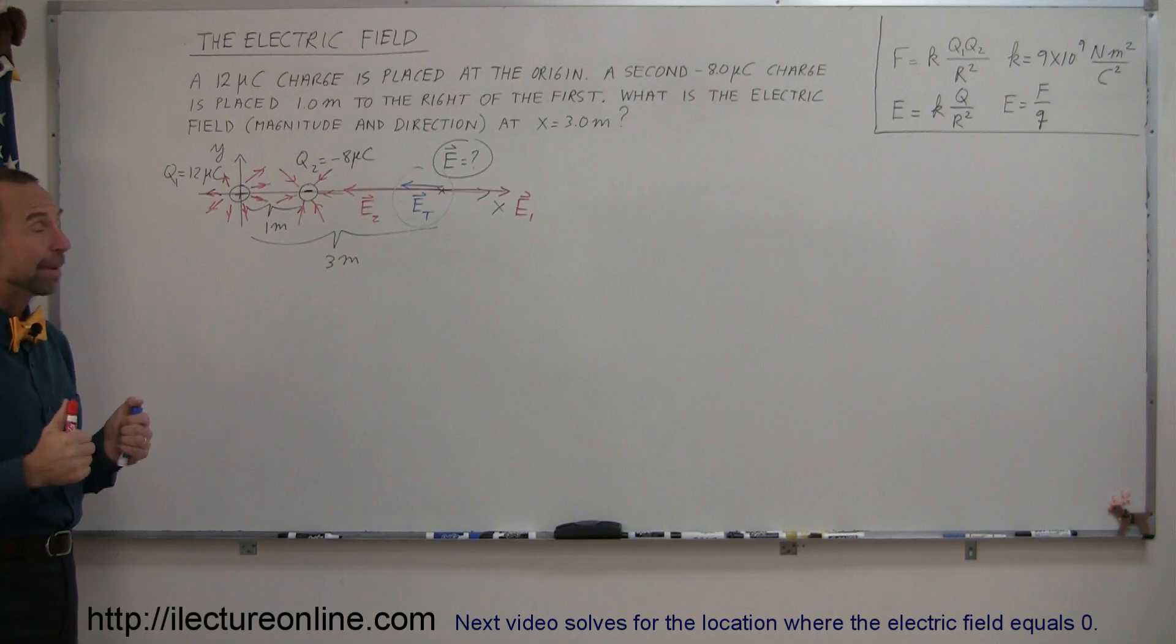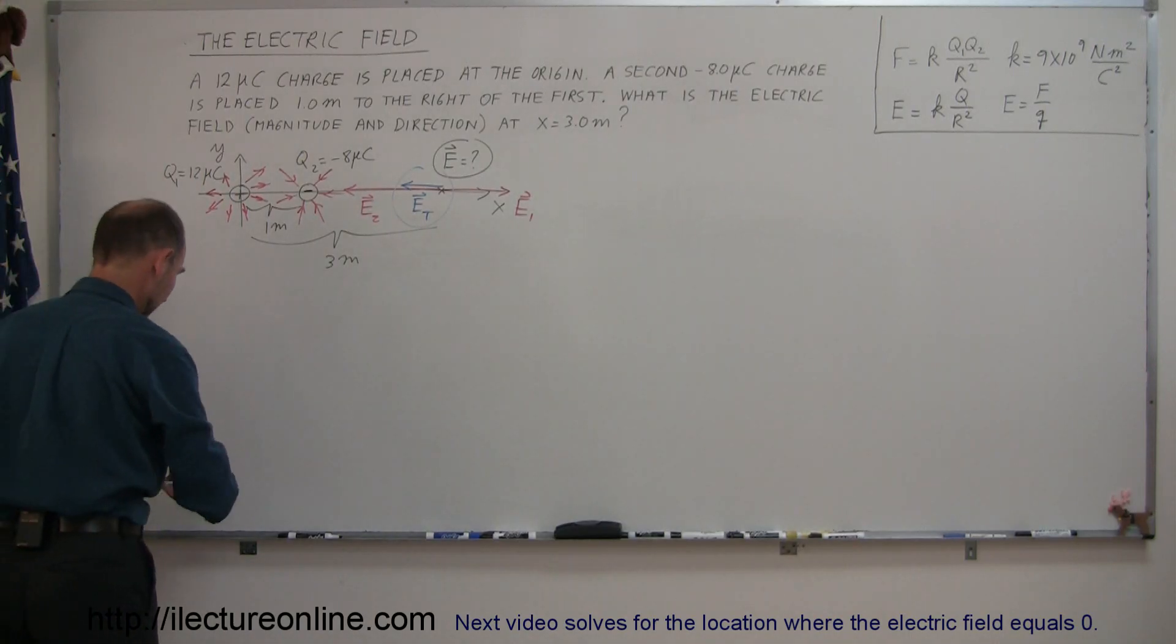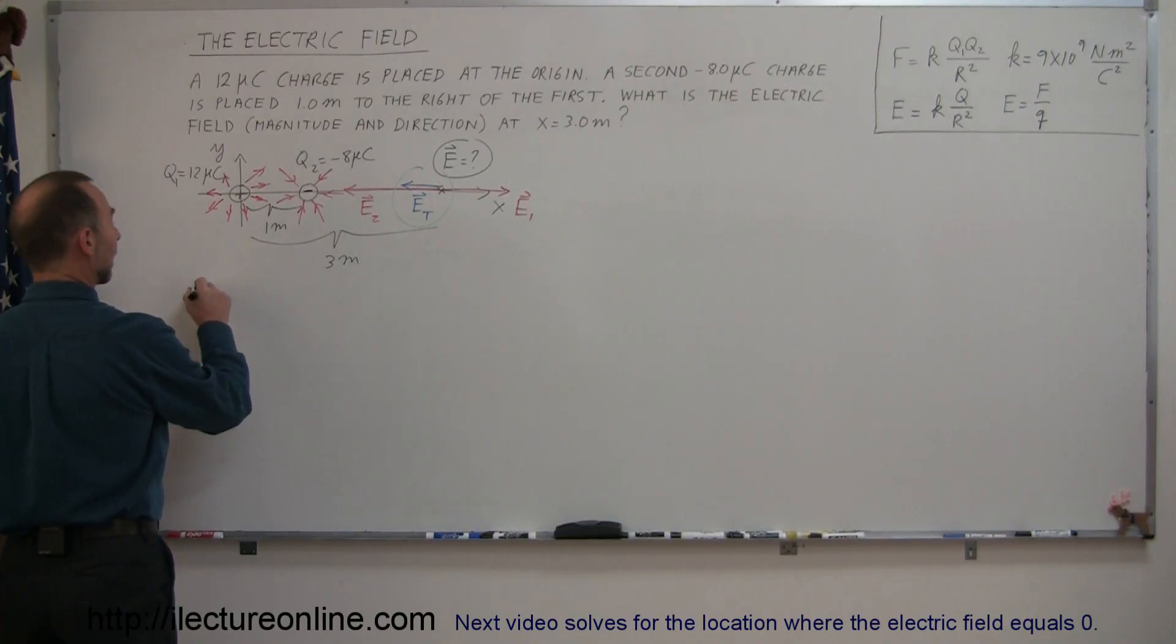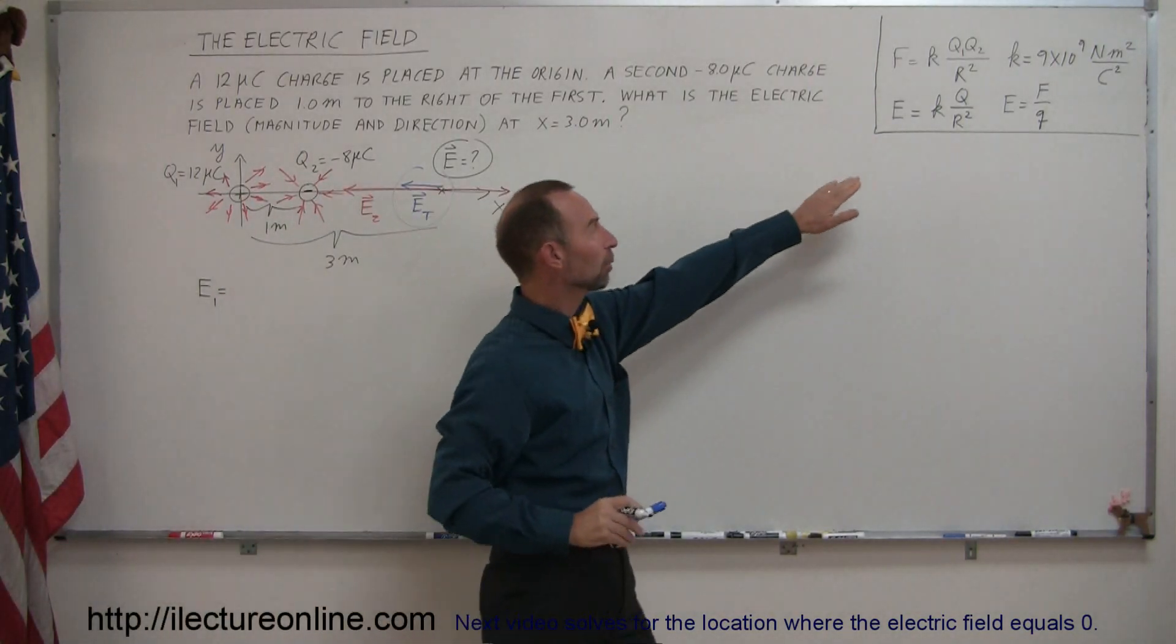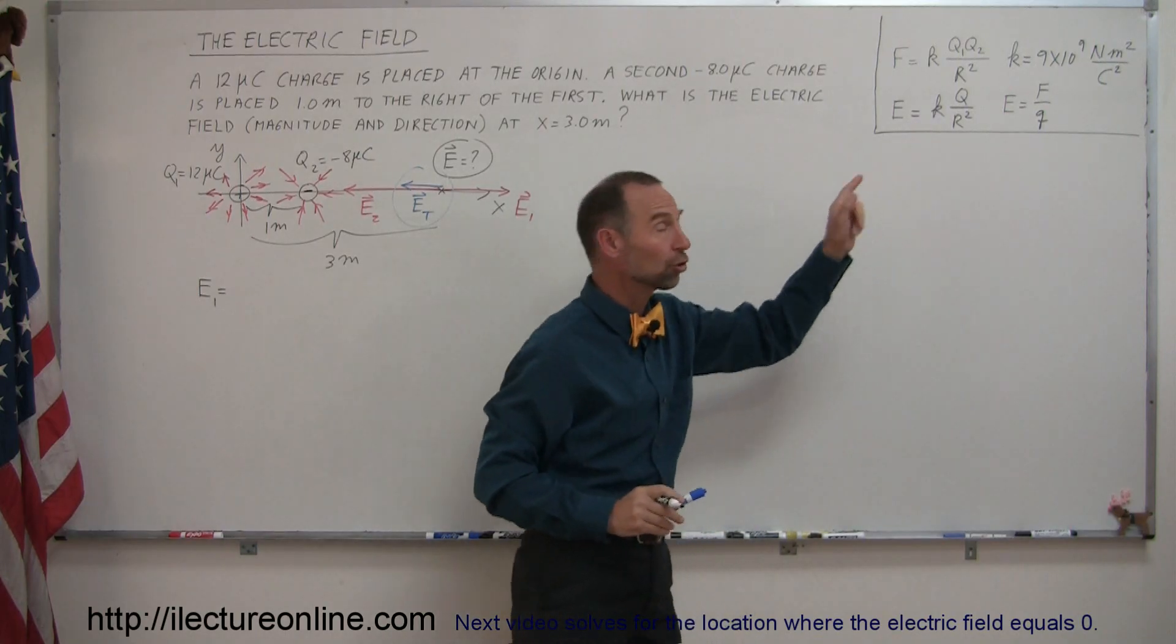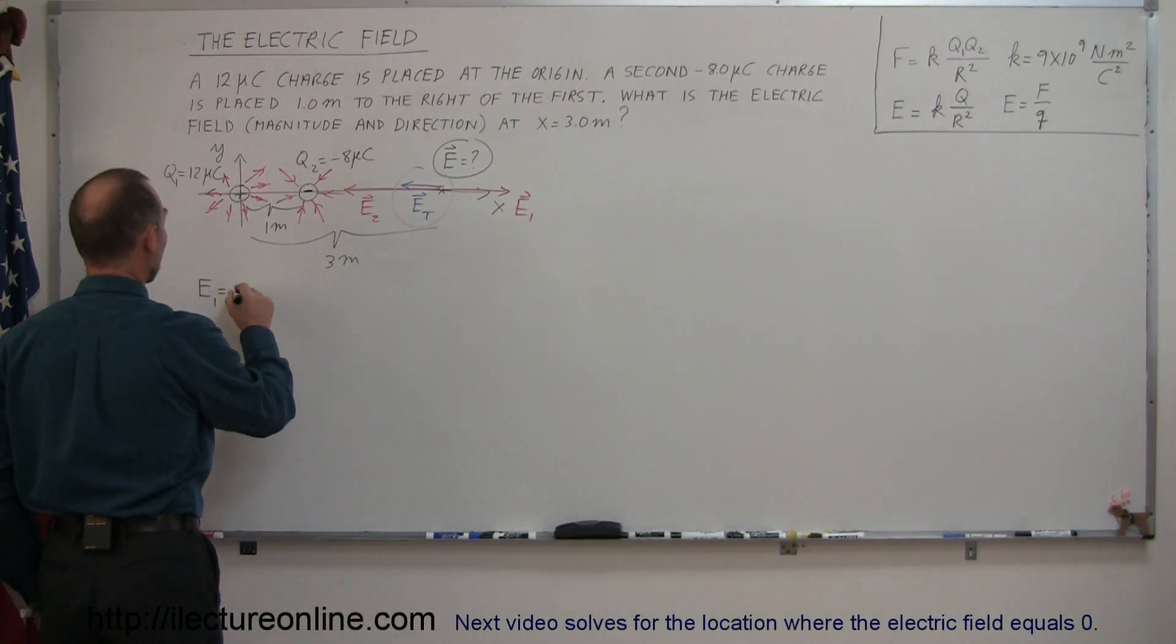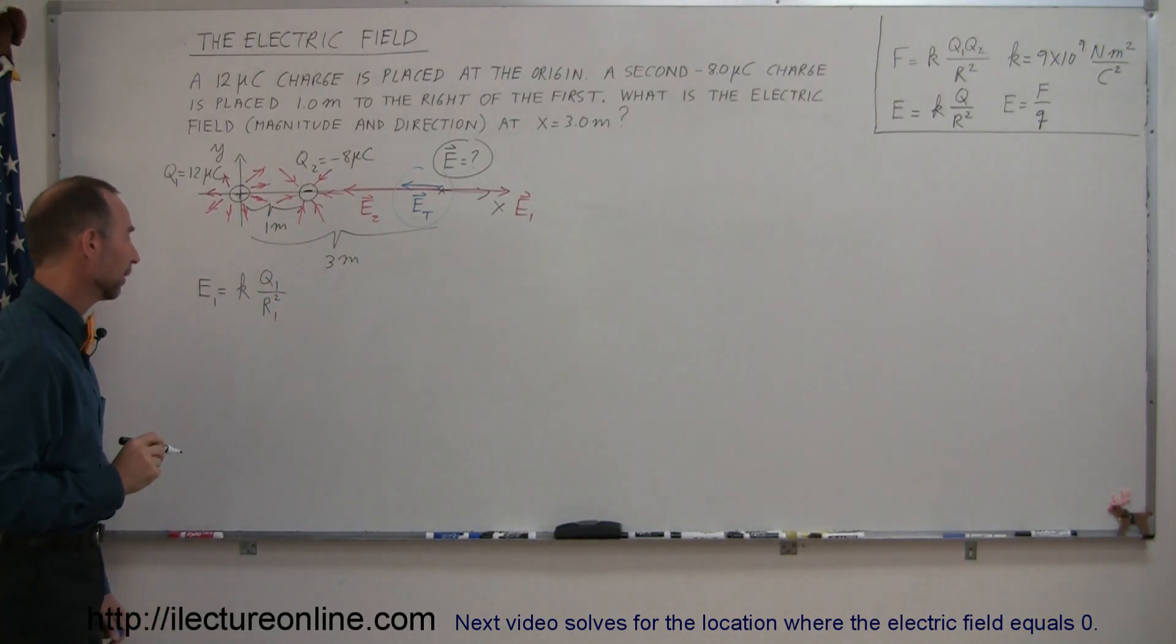To do that, we're going to find the magnitude of both E1 and E2 first. So we have E1 using the equation for finding the electric field due to a point charge. That's equal to K times Q1 over the distance from Q1 to the location we're interested in, squared.